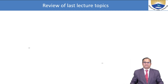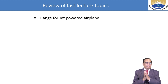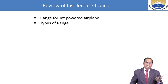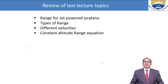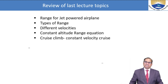and average value range equation. In my last class I discussed range for jet powered airplanes, and we saw that there is a difference between the range of the propeller aircraft and the range of the jet powered aircraft. We have seen three types of ranges. We discussed different velocities: minimum drag velocity, maximum velocity, minimum power velocity, minimum thrust velocity, and star velocity. We have already covered the constant altitude range equation, cruise climb or constant velocity cruise, and range for the propeller aircraft.